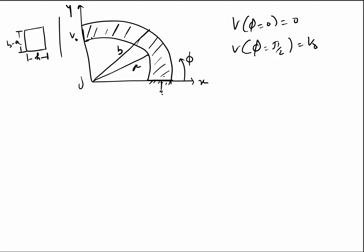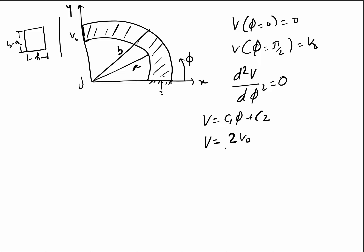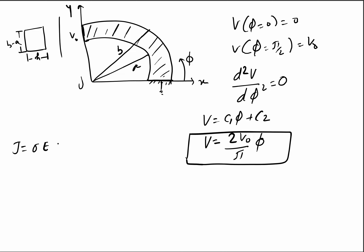For this geometry, the potential is only a function of phi. From Laplace's equation: d²V/dphi² = 0, giving V = C₁·phi + C₂. Applying the boundary conditions, we find V = (2V₀/π)·phi. Then J = sigma·E = −sigma·∇V.